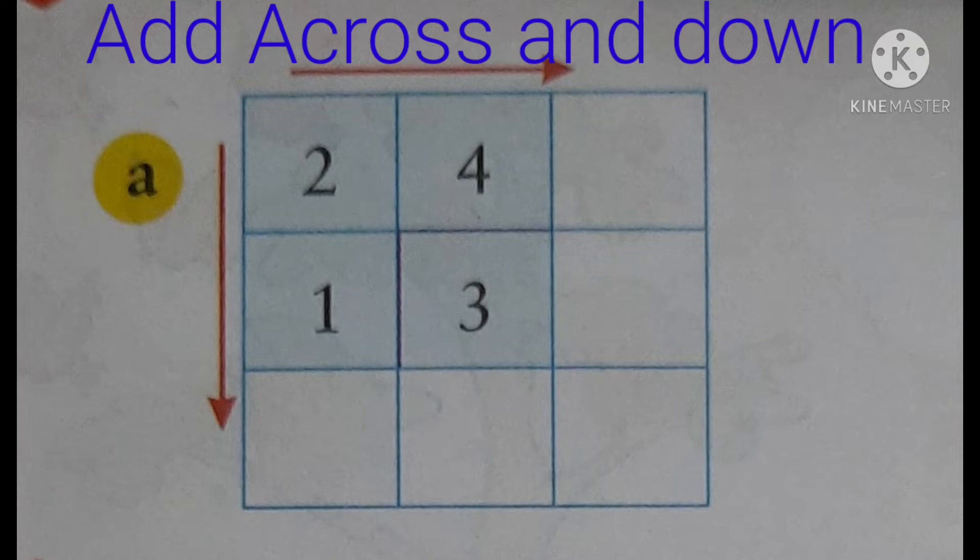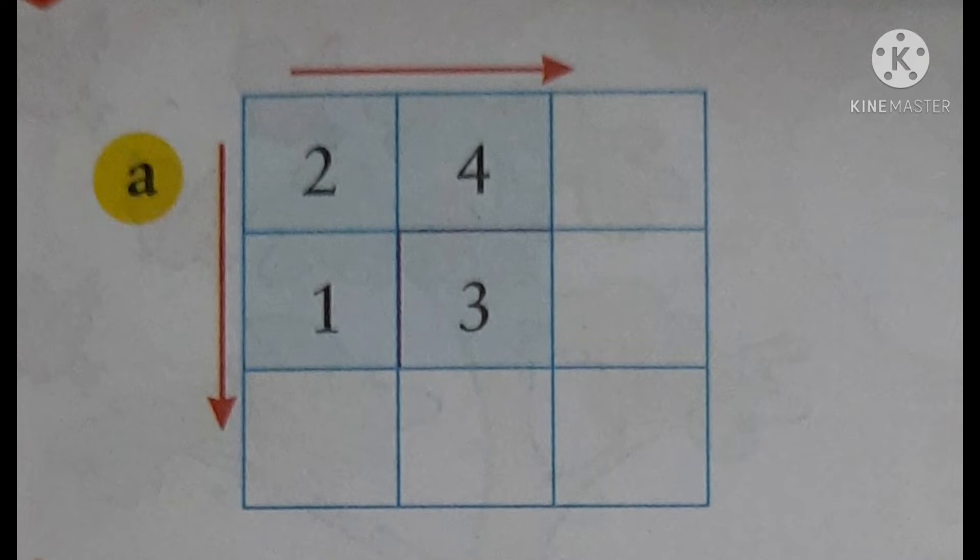Same way the arrow is given. So, you see in the across 2, 4. So, add 2 plus 4. Then 1 plus 3.